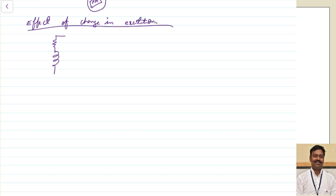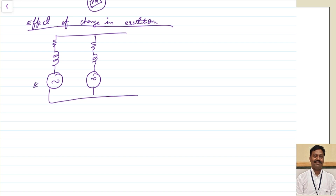When the excitation is changed, what is going to be affected? Let me draw the equivalent circuit of these alternators. Let us assume this is one alternator and this is the second alternator. The EMF produced by the first alternator is E1 and the second one is E2. This is my value of Zs1 and Zs2. This is my terminal voltage V and the frequency is F.